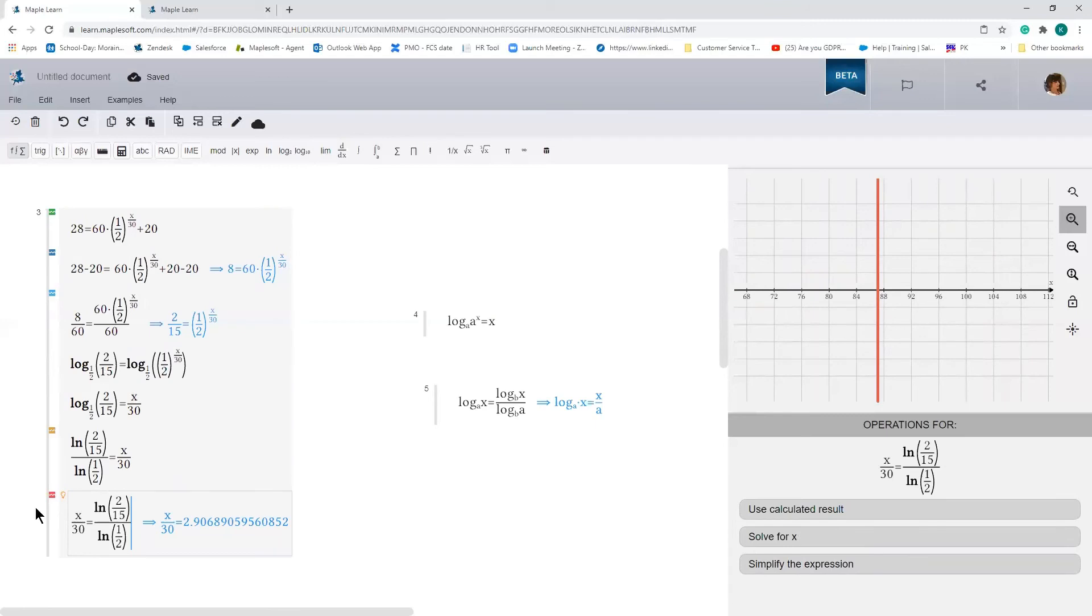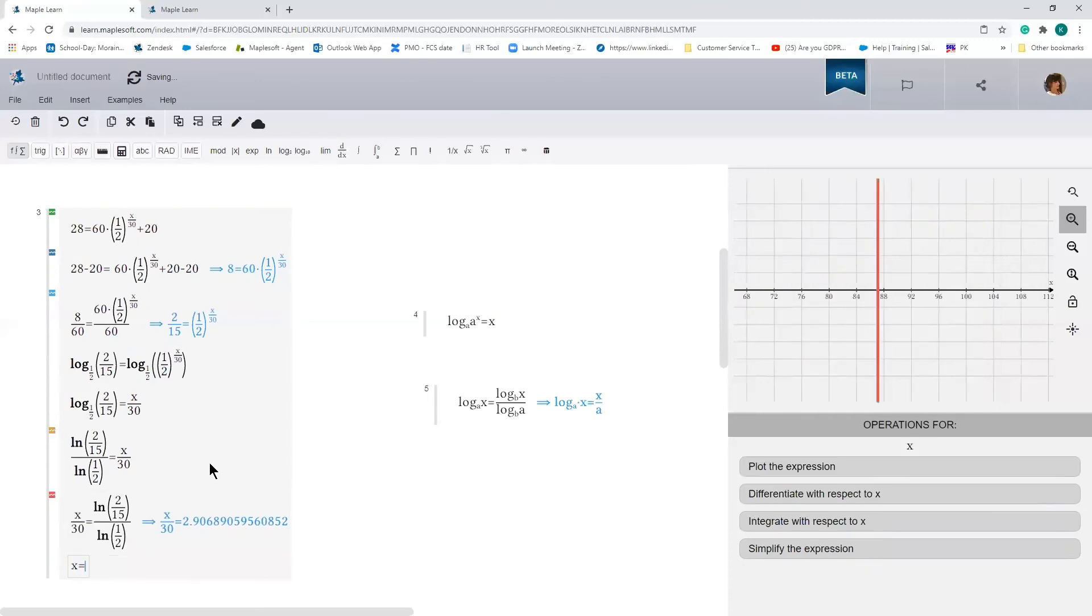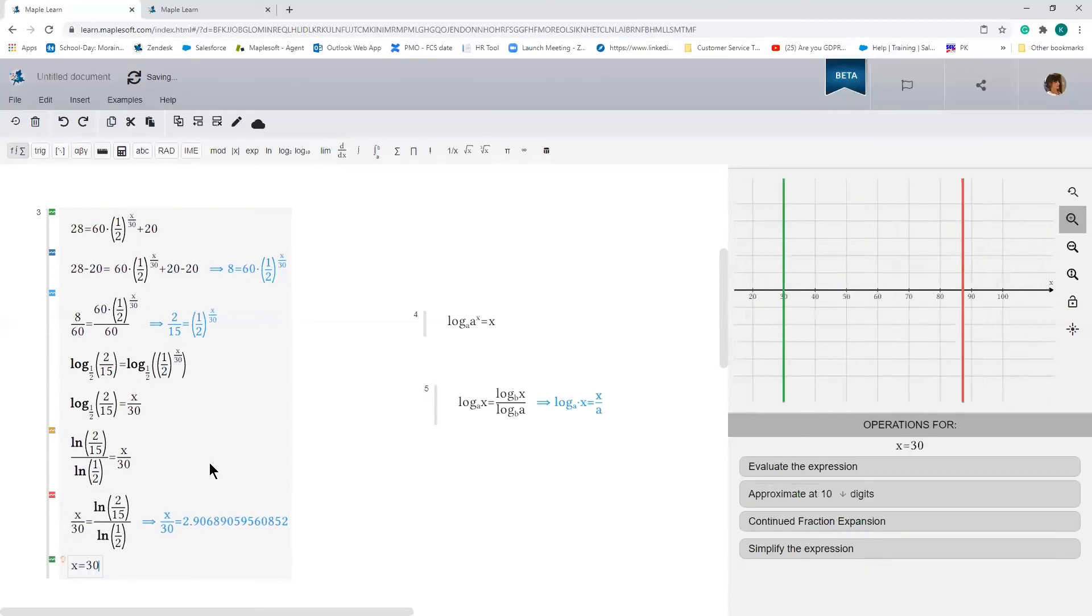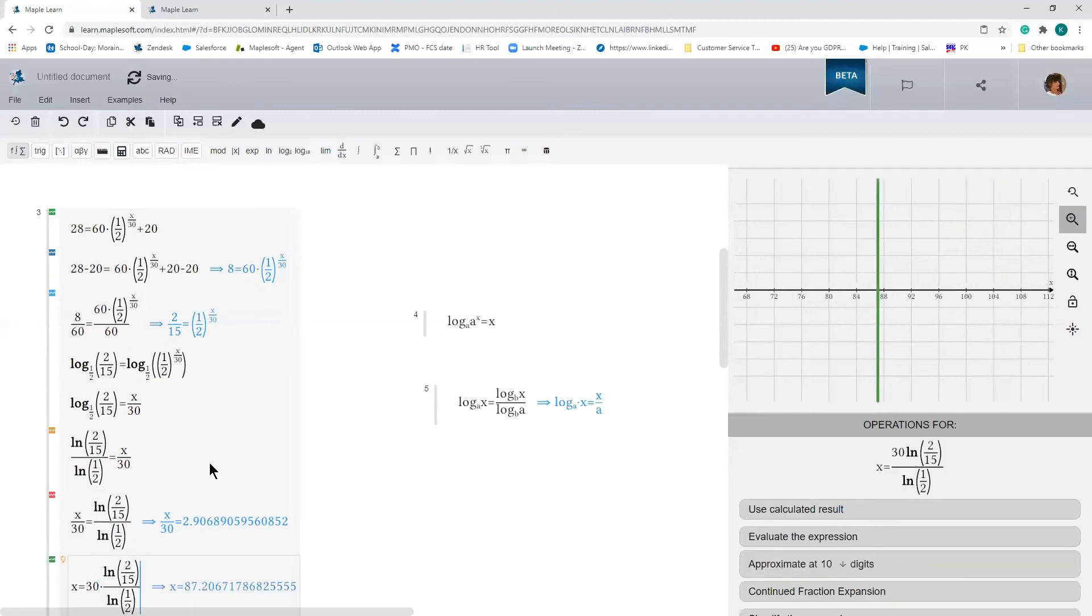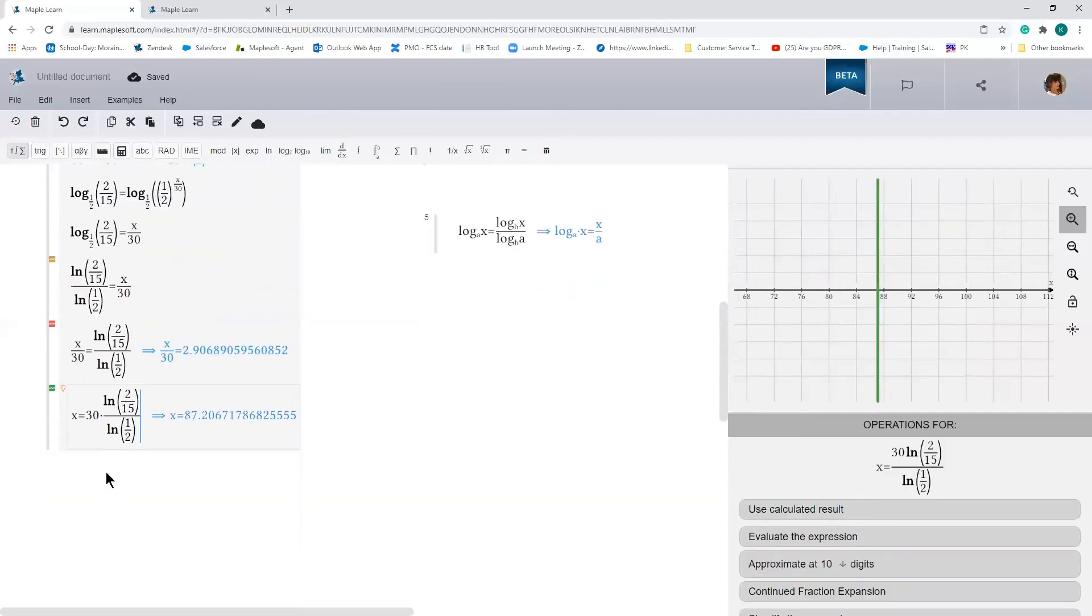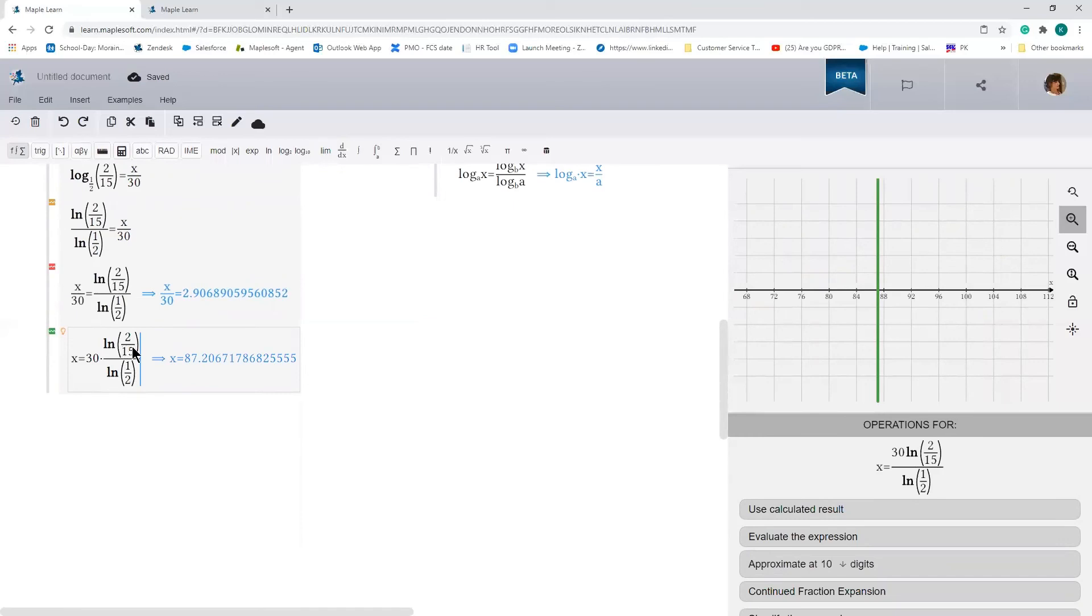And now we need to multiply both sides by 30 in order to isolate for x. That will be x equals 30 times ln of 2 over 15 all over ln of one half, which gives us a value for x or time as approximately 87 minutes.